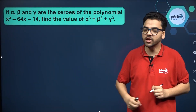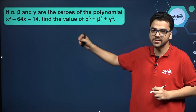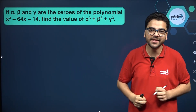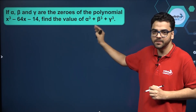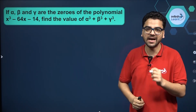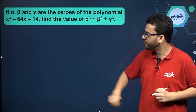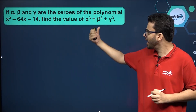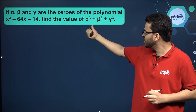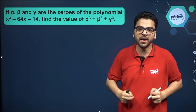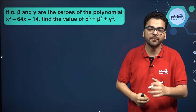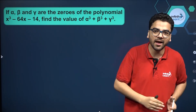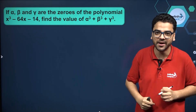We have a cubic polynomial whose zeros are alpha, beta, and gamma, and we have to find the value of alpha cubed plus beta cubed plus gamma cubed. If you think of finding the values of alpha, beta, and gamma separately and then putting them into the expression, maybe you'll be able to do that but it will take too much time. So we have to use another way of doing this.